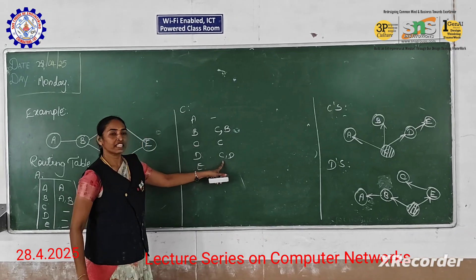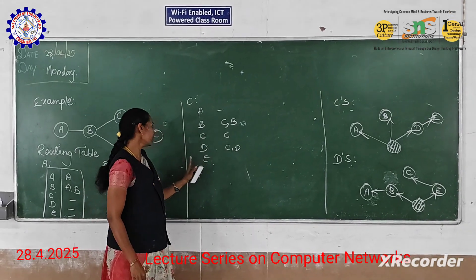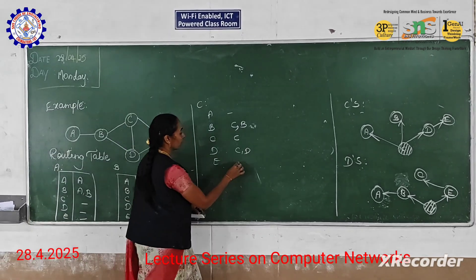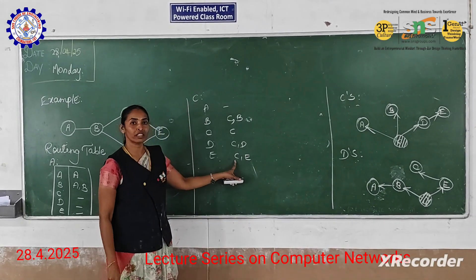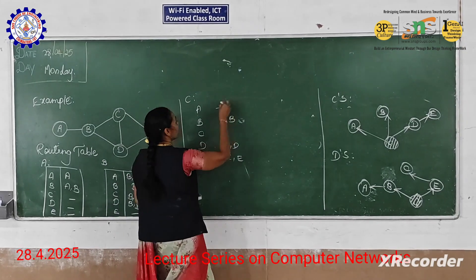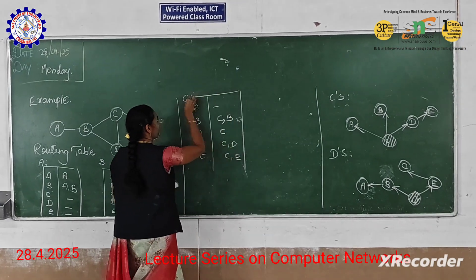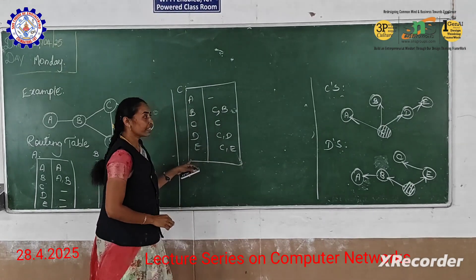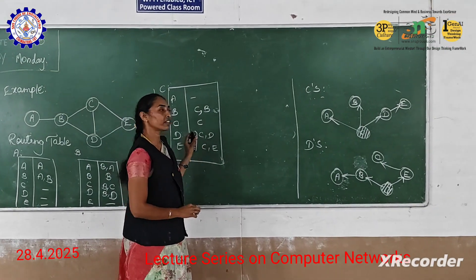Here C is denoting as source node and D is the destination node. Then from C to E is C comma E — here C is the source node and E is the destination node. Then, how to validate routing table format, the node B.